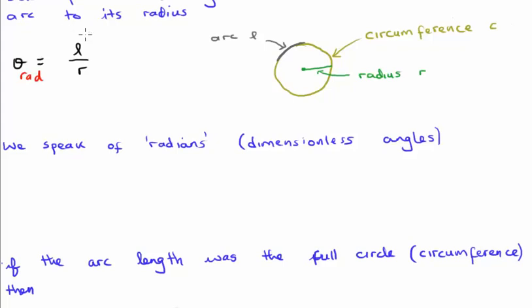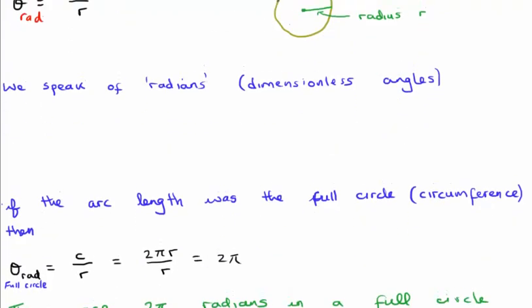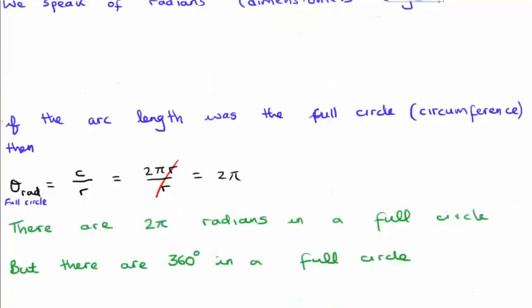What happens if we look at the whole circle — if the arc length becomes the full circumference? We find that there are C over R radians in a full circle. But we know that C equals twice pi times R, and the R's cancel, so there are two pi radians in one full circle. This contrasts with having 360 degrees in a full circle.